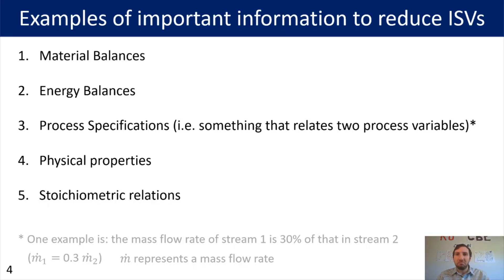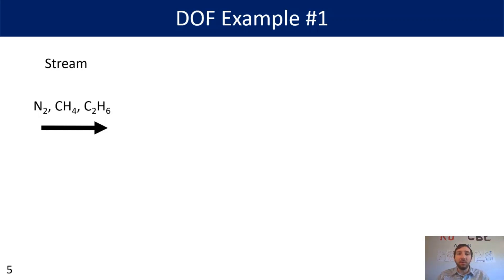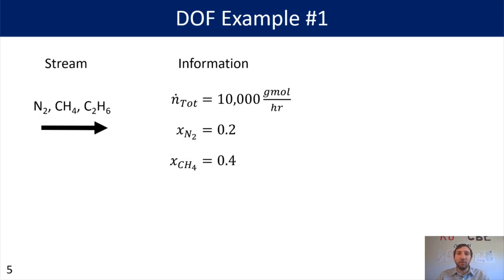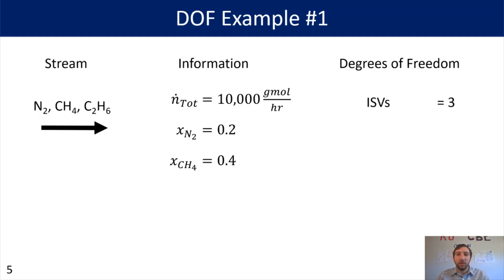Now we're going to jump into some practice problems doing these degree of freedom analyses. For our first problem we just have a stream with three components: nitrogen, methane, and ethane. The total molar flow rate is 10,000 gram-moles per hour, the mass fraction of nitrogen is 0.2, and the mass fraction of methane is 0.4. We have three independent stream variables (one per component) and three pieces of information, so we have zero degrees of freedom — we could solve this problem.